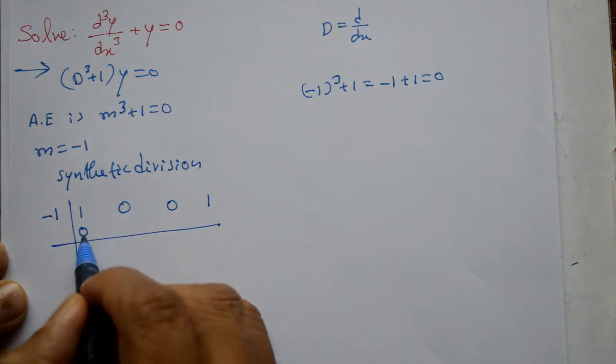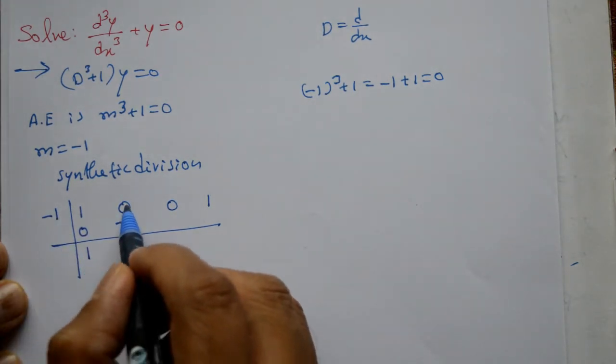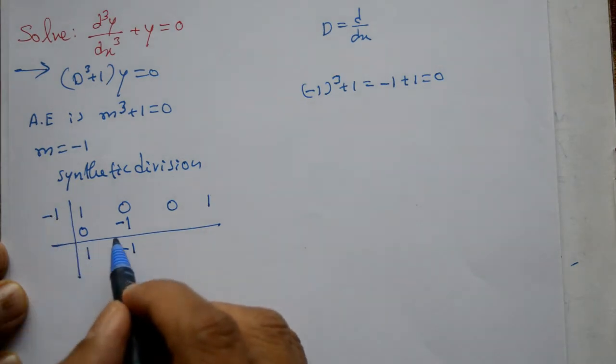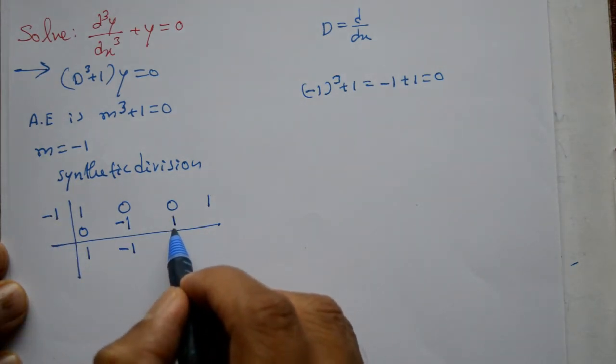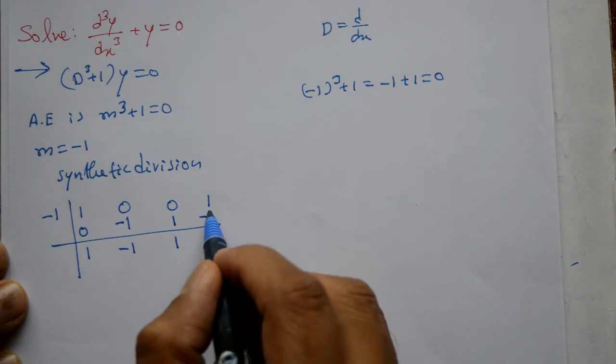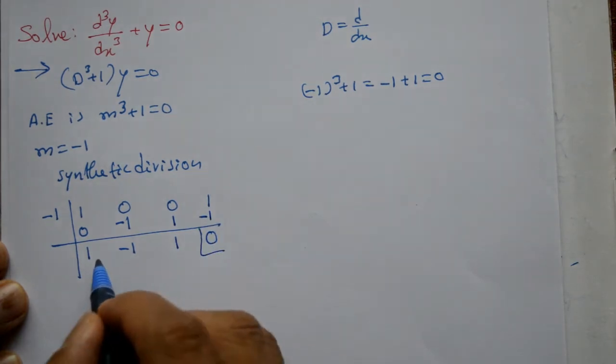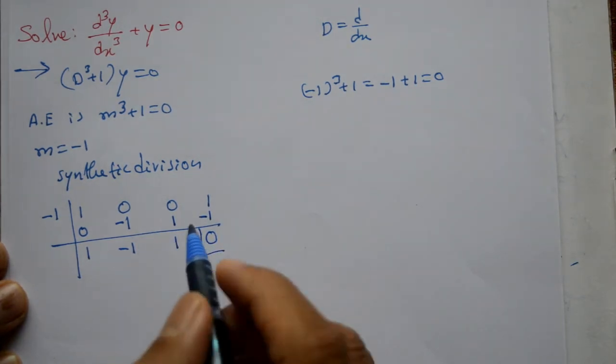Issi roots ko idha lehenge. Pahela haum 0 isko add karenge. E1 ho gaya. Minus 1 into 1. E minus 1 ho gaya. Isko add karenge to minus 1 aayega. Minus 1 into minus 1. Plus 1 aayega. Baad me, add karenge. Minus 1 into 2 plus 1. Minus 1 aayega. E0 aayega. Ok. 1 minus 1.